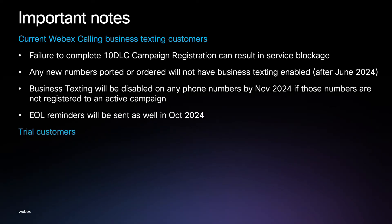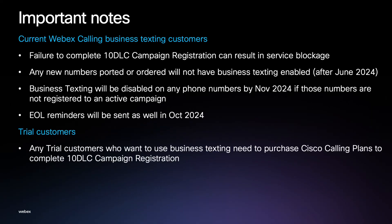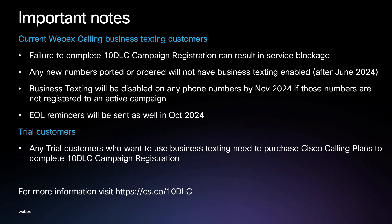For trial customers, any trial customer who wants to use business texting needs to purchase Cisco Calling Plans to complete the 10DLC campaign registration. For more information, please visit cs.co/10DLC or see links for additional information in the description of this video.